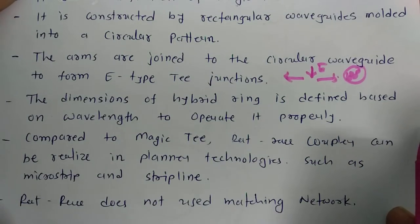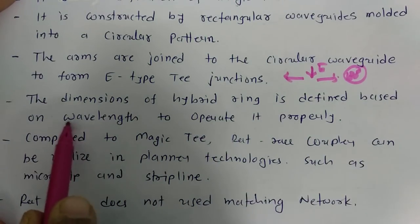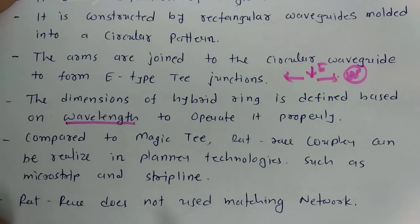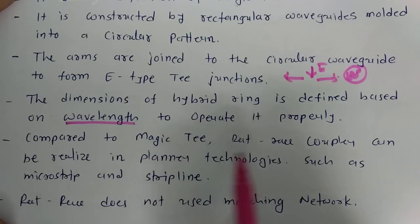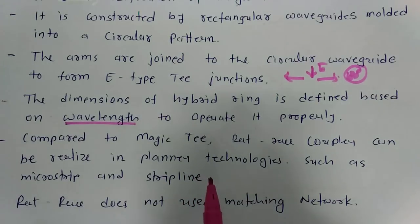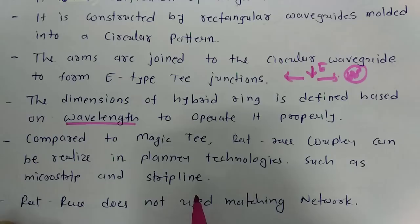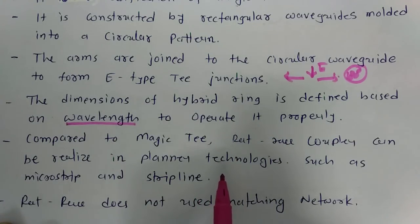The dimensions of the hybrid ring are defined based on wavelength, which I'll explain in the structure section. Compared to the magic T, the hybrid ring can be realized using planar technology — we can have a hybrid ring using microstrip lines. One can design a hybrid ring using microstrip lines or using a waveguide coupler. In this session I'll explain it with respect to a waveguide coupler, but hybrid rings are also available with microstrip fabrication.